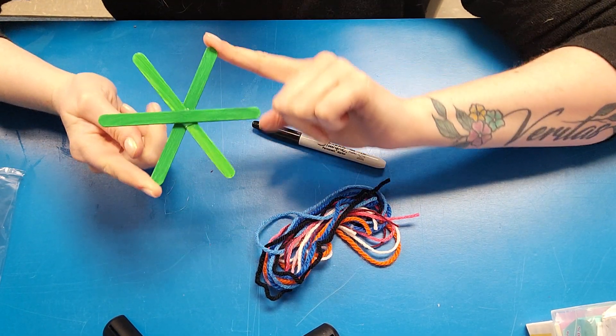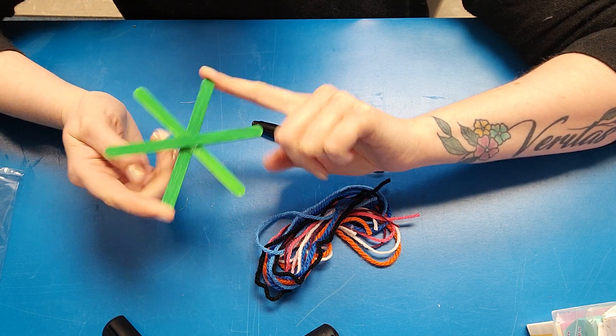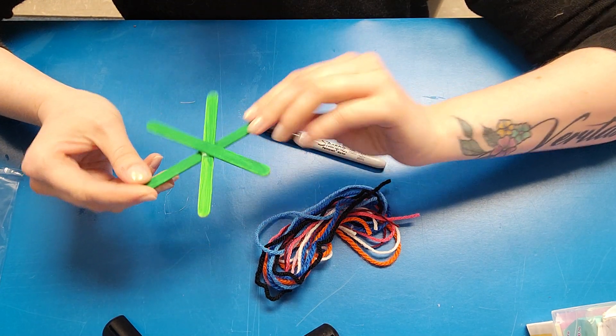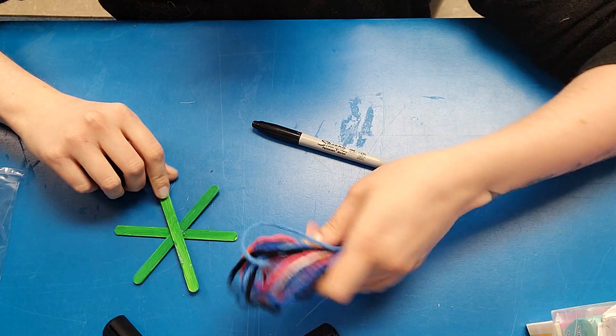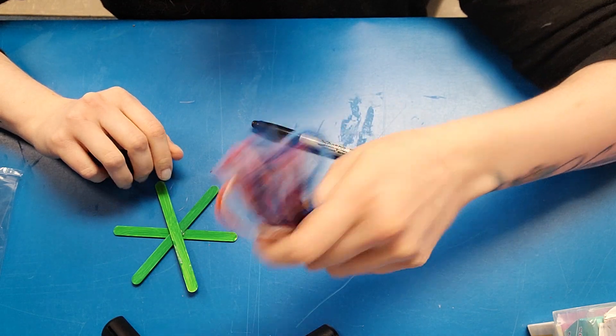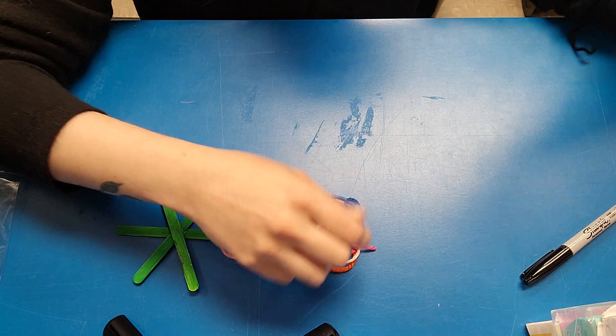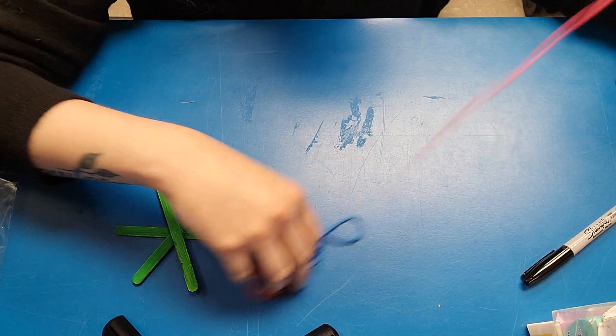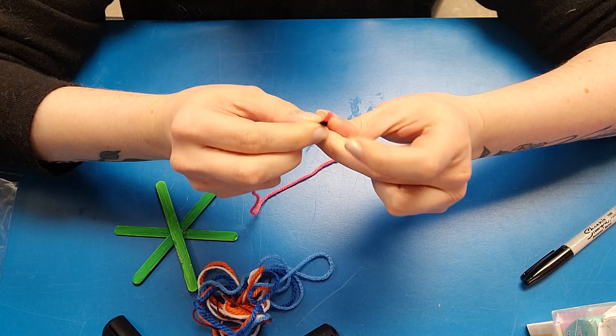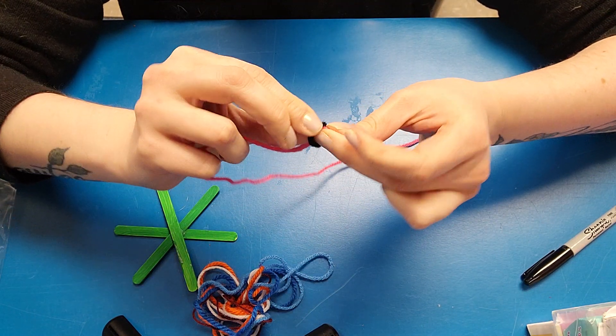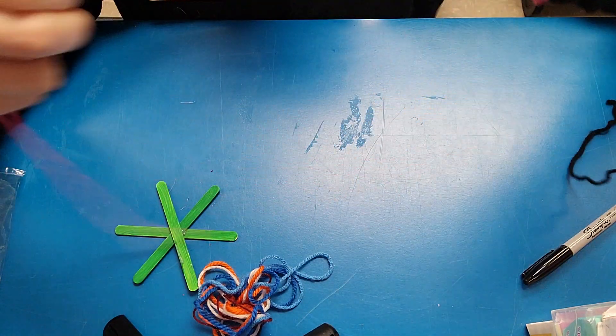You already have your turtle body prepped. It is three popsicle sticks that I painted green and glued together, and then you have seven pieces of yarn. Each piece of yarn is approximately two feet long, so you have about 14 feet of yarn and that might be a little bit too much depending on what you want to use, but better too much than too less.